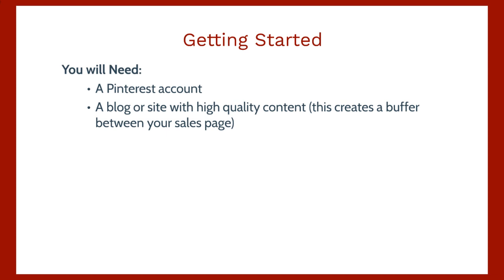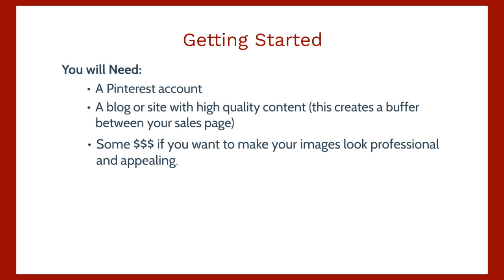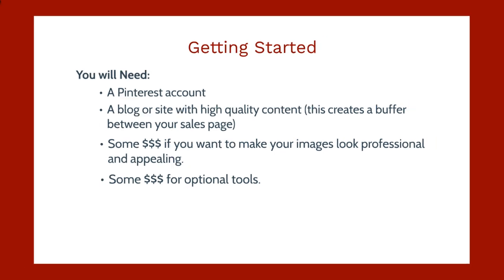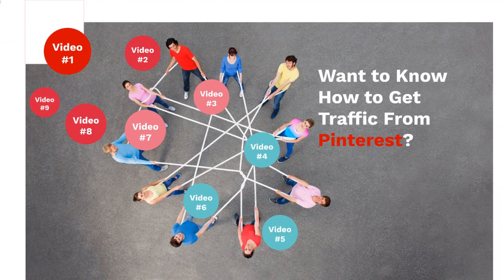What the high quality content does is create a buffer between your sales page and the image or opt-in page. You get them on your list, they sign up, you build a relationship with them, and then you warm them up — these are people you don't know. Optionally, you'll need some money to make your images look professional: you can purchase royalty-free images from sites like bigstockphoto.com that are already professionally made and fit your niche. With that said, let's move on to video number two.